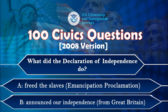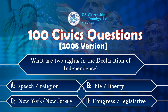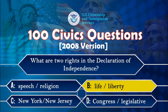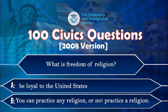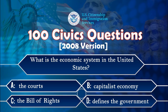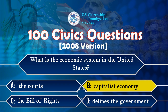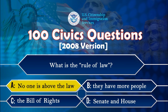What did the Declaration of Independence do? Announced our independence from Great Britain. What are two rights in the Declaration of Independence? Life. Liberty. What is freedom of religion? You can practice any religion or not practice a religion. What is the economic system in the United States? Capitalist economy. What is the rule of law? No one is above the law.